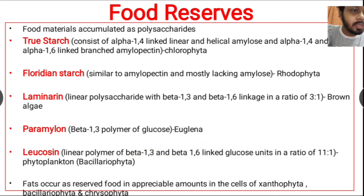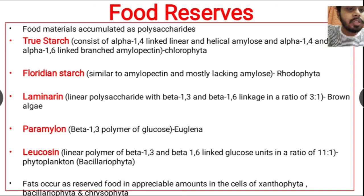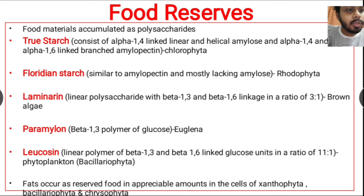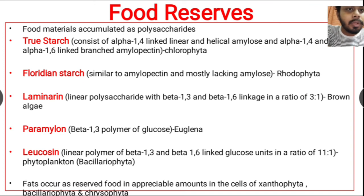Leucosin has a ratio of 11:1 — that means after 11 glucose molecules attached by beta-1,3 linkage, one molecule of glucose is linked by beta-1,6 linkage, giving a ratio of 11:1. This type of leucosin polysaccharide is reserved as food in Bacillariophyta or phytoplankton algae.